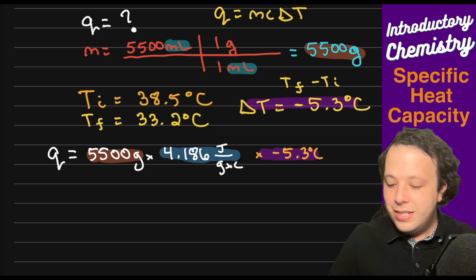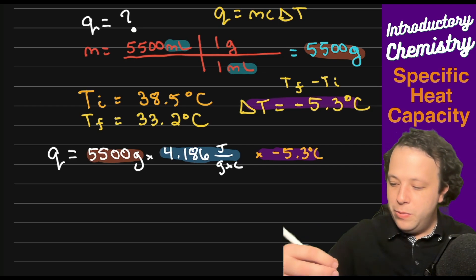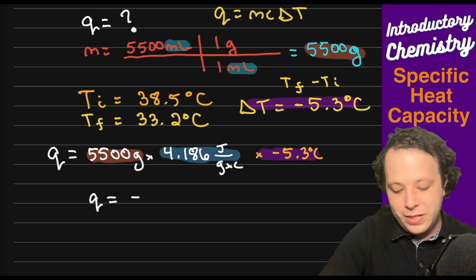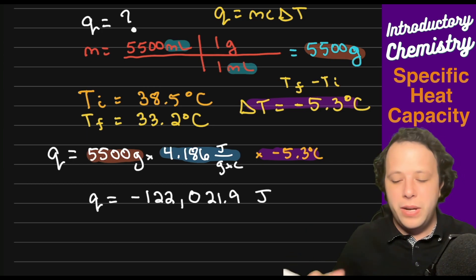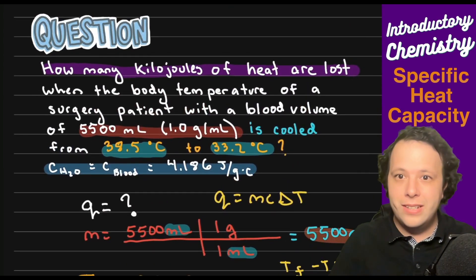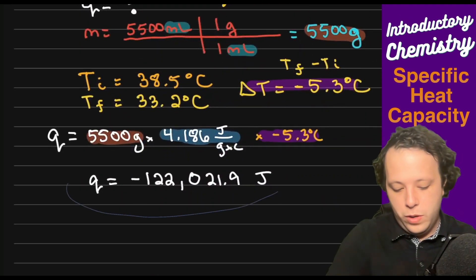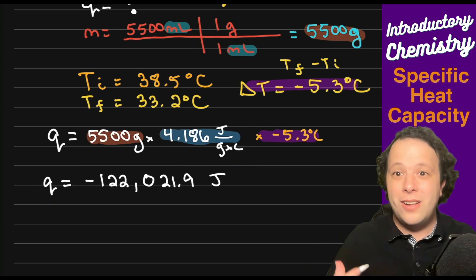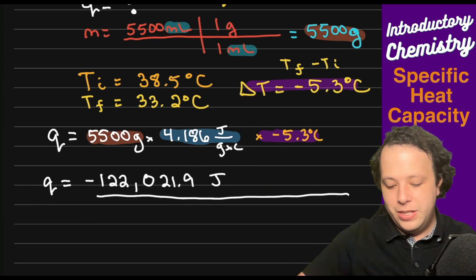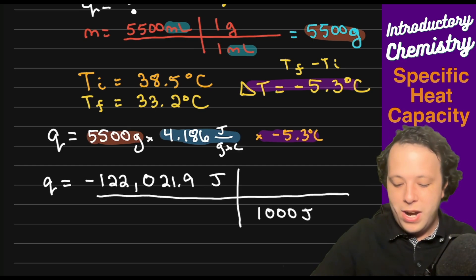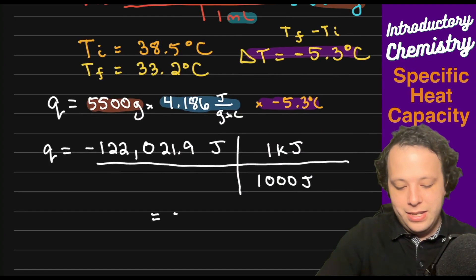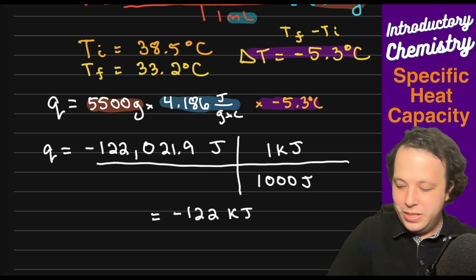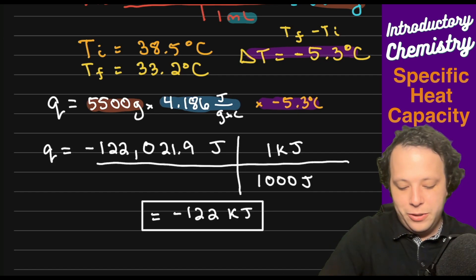We have our mass being placed in here and then last but not least we have our temperature which is that negative 5.3 degrees C. We have all our values here so what we will do is take 5500 grams times it by 4.186 times by negative 5.3. What we will get in the end is a negative q value which is going to be in joules and we will get negative 122,021.9 joules for our answer. Now is this really the way that you want it? Well earlier it mentioned we want this in kilojoules.